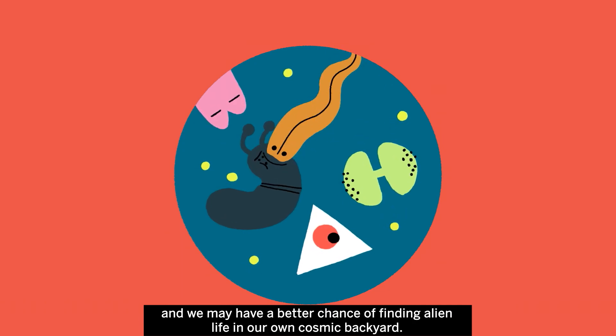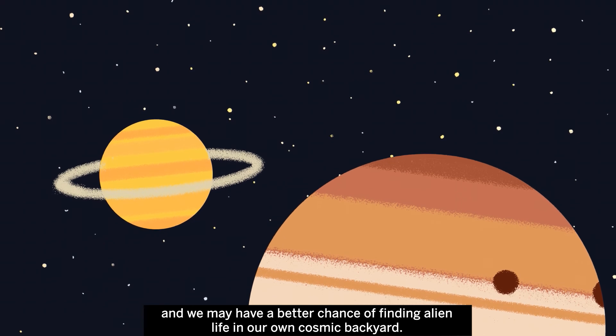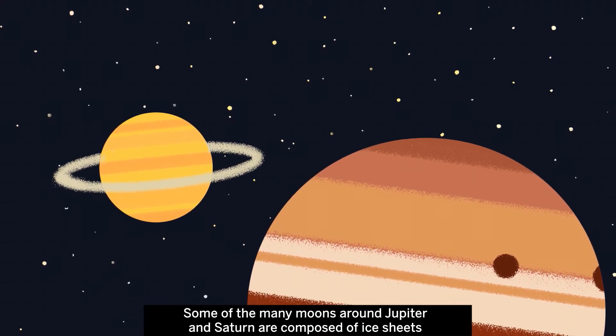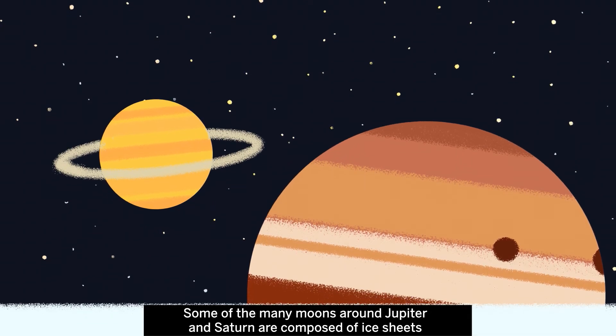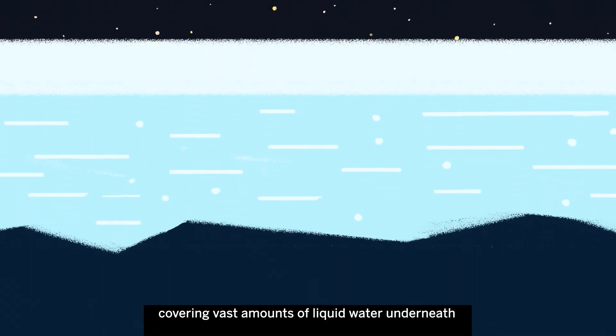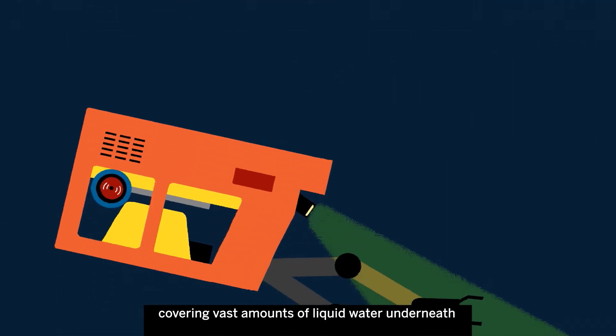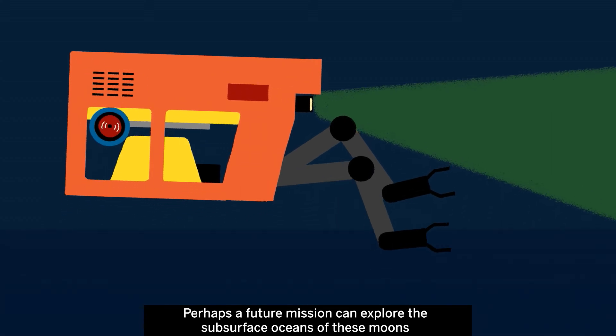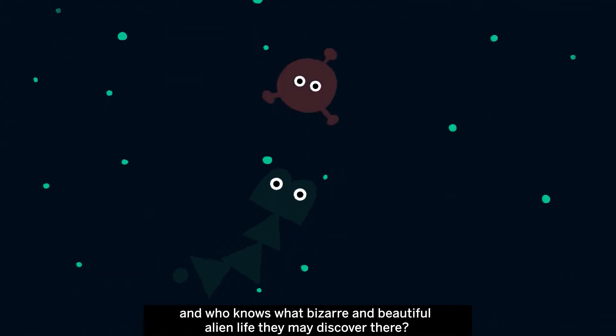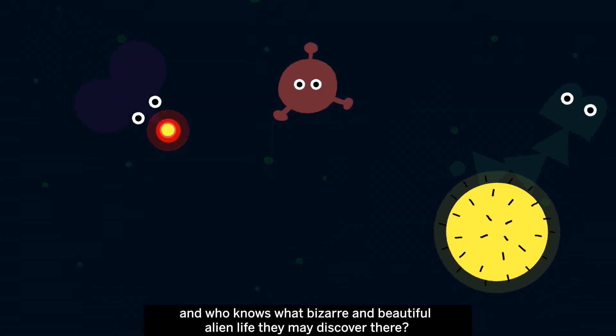We may have a better chance of finding alien life in our own cosmic backyard. Some of the many moons around Jupiter and Saturn are composed of ice sheets covering vast amounts of liquid water underneath. Perhaps a future mission can explore the subsurface oceans of these moons, and who knows what bizarre and beautiful alien life they may discover there.